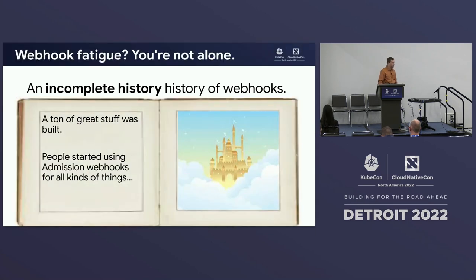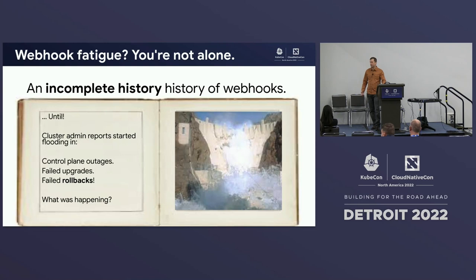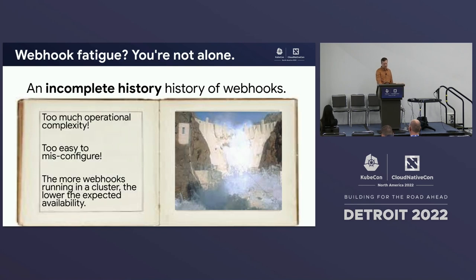People were successful in implementing a lot of what they needed to build, and a ton of great stuff has been built. You can see webhooks in pretty widespread use across Kubernetes. But unfortunately, that's where things started to get into trouble. Reports started coming in from cluster admins and cloud providers of control plane outages from webhooks, failed upgrades, and even failed rollbacks.